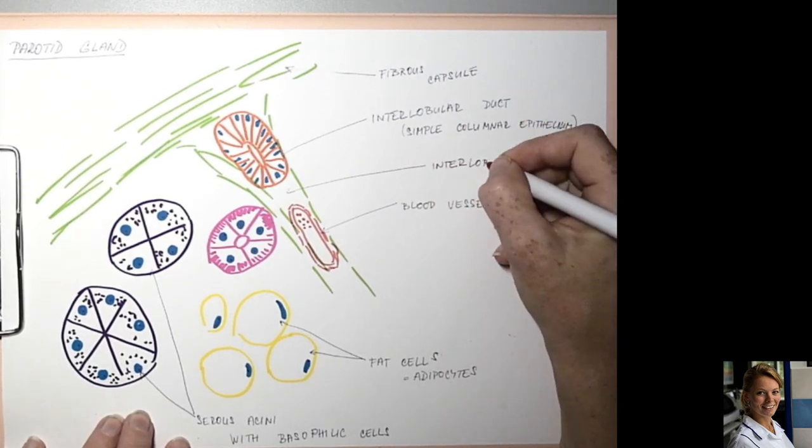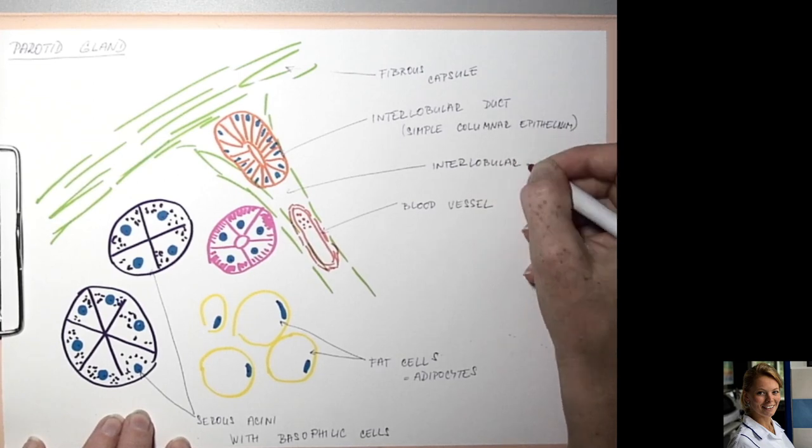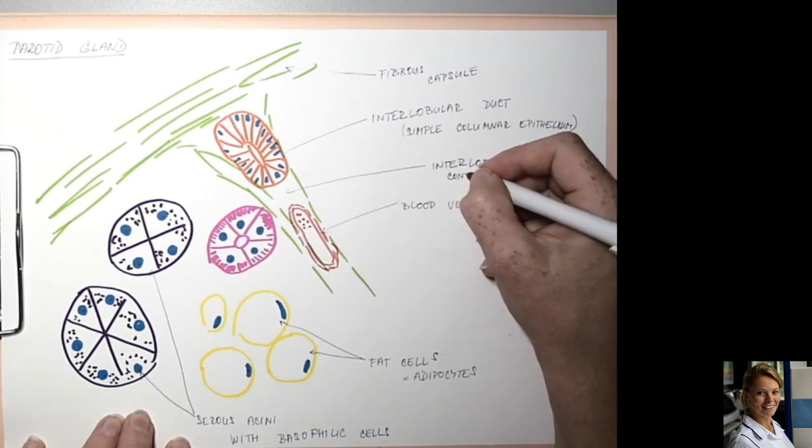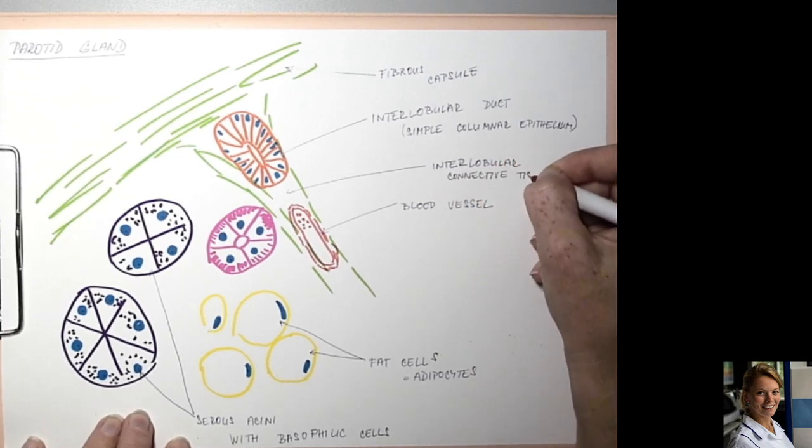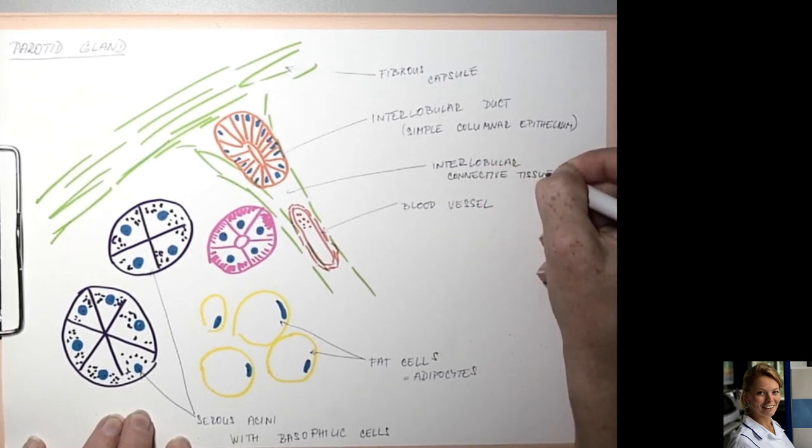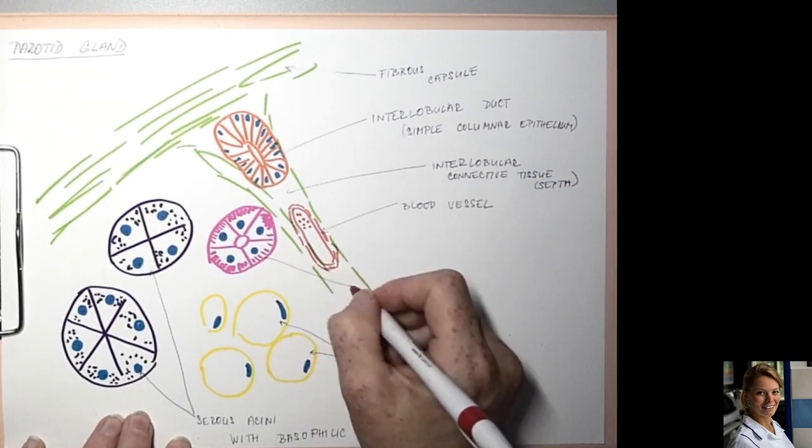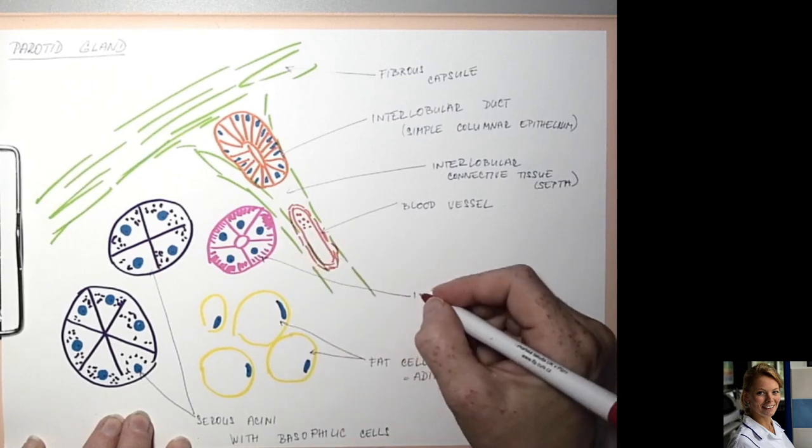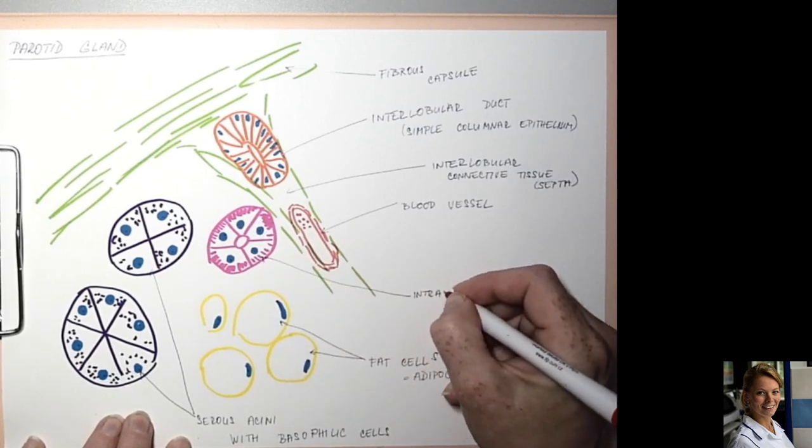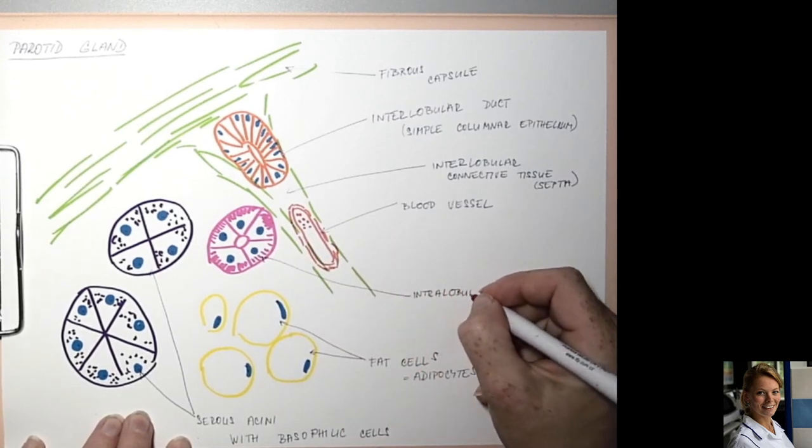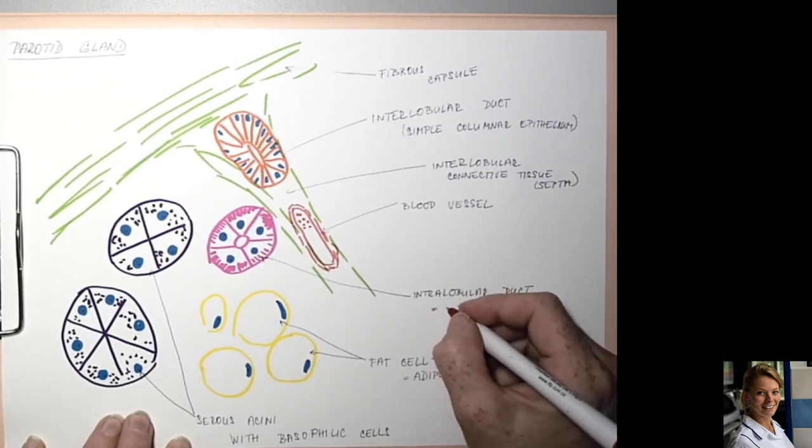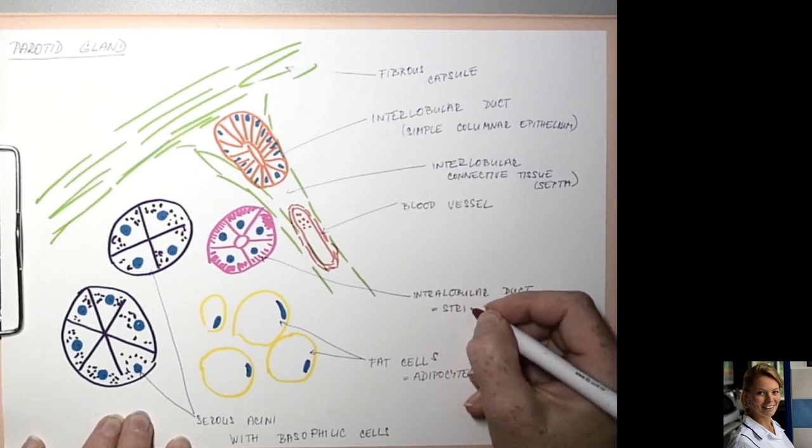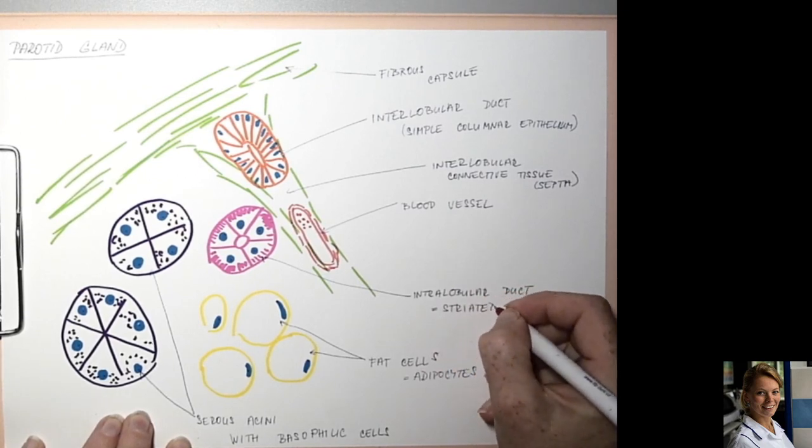And here is interlobular connective tissue which forms septa, and here is the intralobular duct, concretely a striated duct.